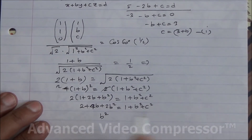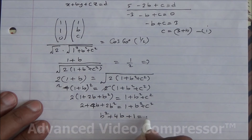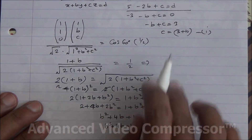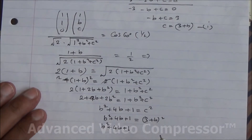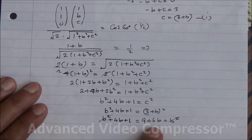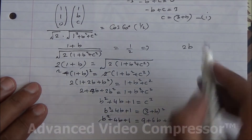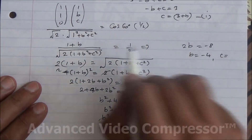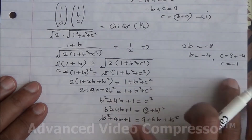Substituting c = 3 + b into b² + 4b + 1 = c²: we get b² + 4b + 1 = (3 + b)² = 9 + 6b + b². The b² terms cancel, leaving 4b + 1 = 9 + 6b, so 1 - 9 = 6b - 4b, giving 2b = -8, therefore b = -4. Then c = 3 + (-4) = -1.